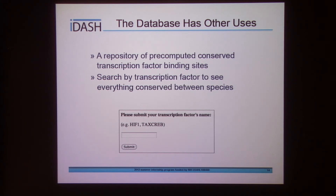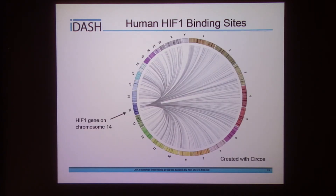In addition to helping with microarray experiments, the transcription factor binding site database is a repository of pre-computed conserved transcription factor binding sites between different species. Say you were interested in the binding site, not the gene experiment — there's now a reverse lookup where you can enter a transcription factor name and see everything that's conserved between two species. To show the complexity of this data, I generated this graph with a tool called SIRCOSE. Over here on the left you can see the location of the HIF-1 gene on chromosome 14, and radiating out from that are gray lines representing connections to conserved HIF-1 binding sites on the human genome — quite a lot of binding sites.